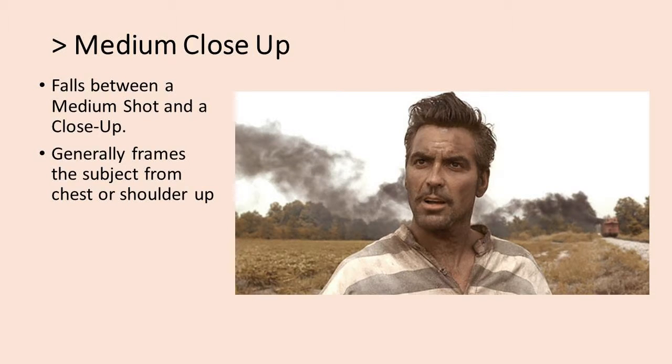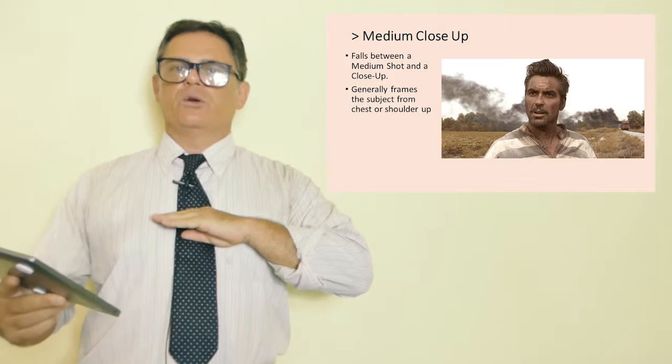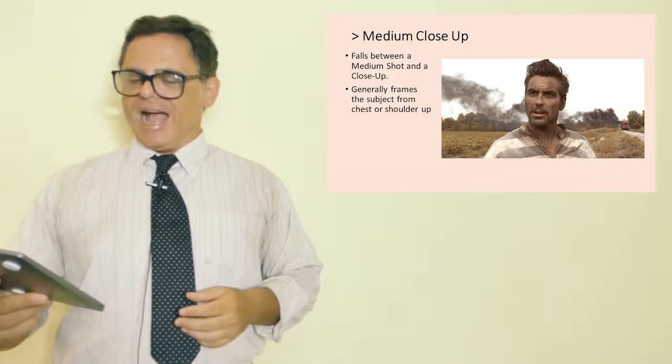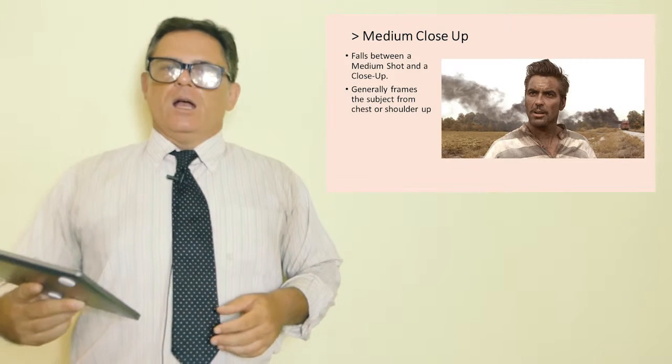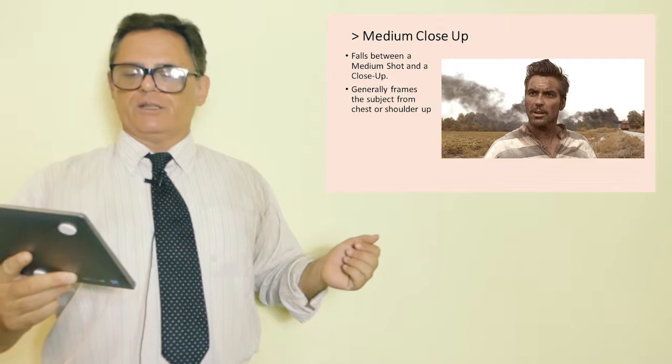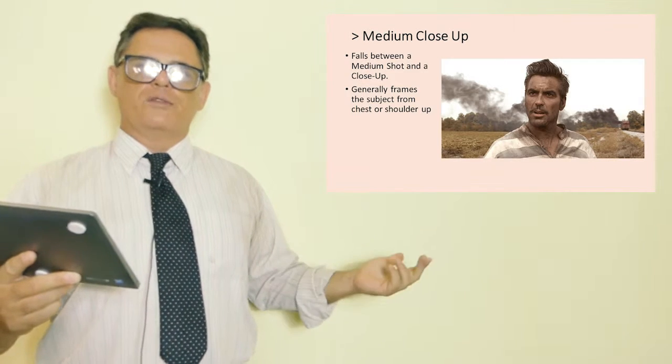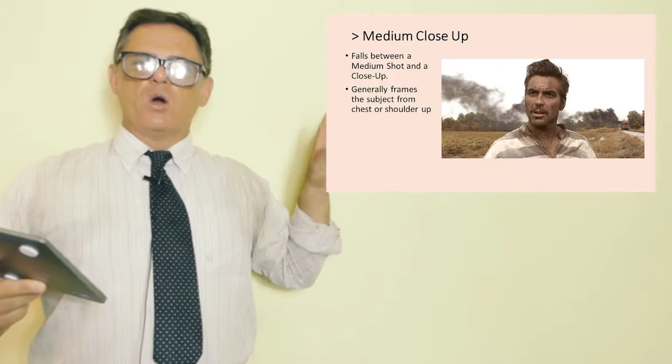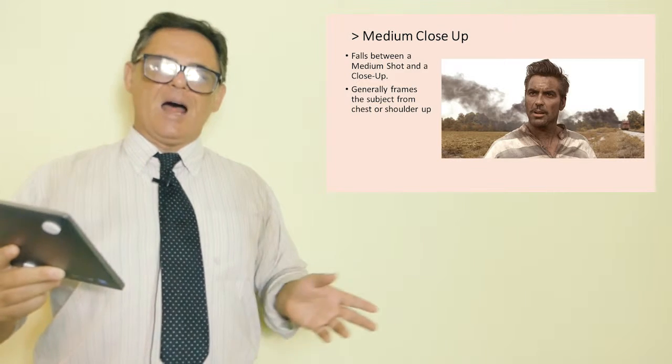So let's move on now. We've got our medium closeup. A medium closeup, as you can see in your notes, it falls somewhere between the medium shot and a closeup. It's generally framed from the chest or shoulder. So where I'm holding my hand now and where you can see in the frame, that is the medium closeup. In this case, you can still see some background action. You can see, I think this is from Oh Brother Where Art Thou by the Coen Brothers. You can see smoke in the background, a bit of a road, not much else. We do know the scene is outside, but really in this shot, the medium closeup, it's about the character's expression.